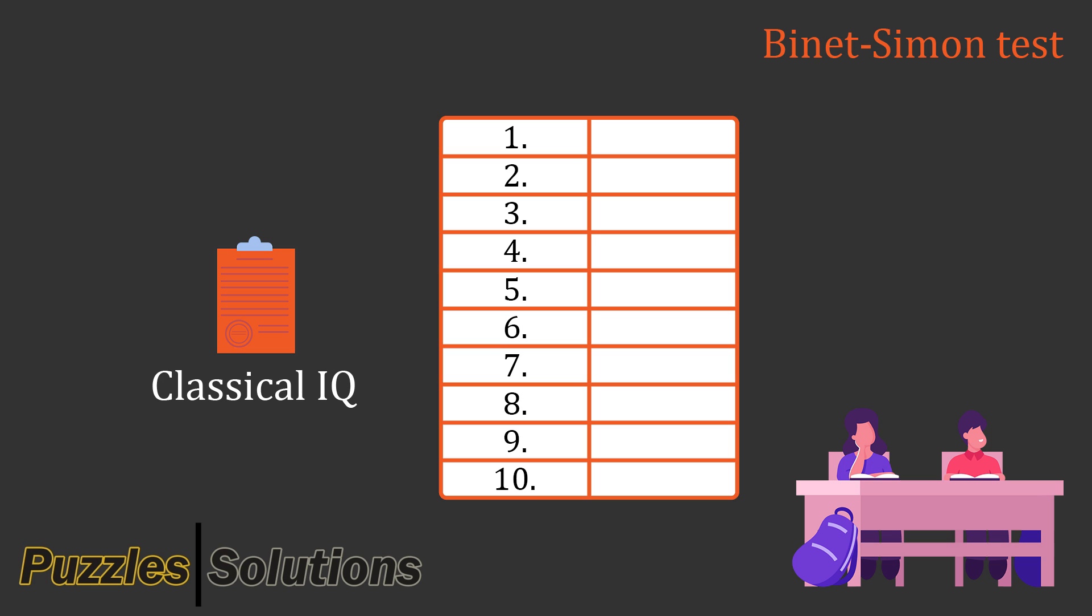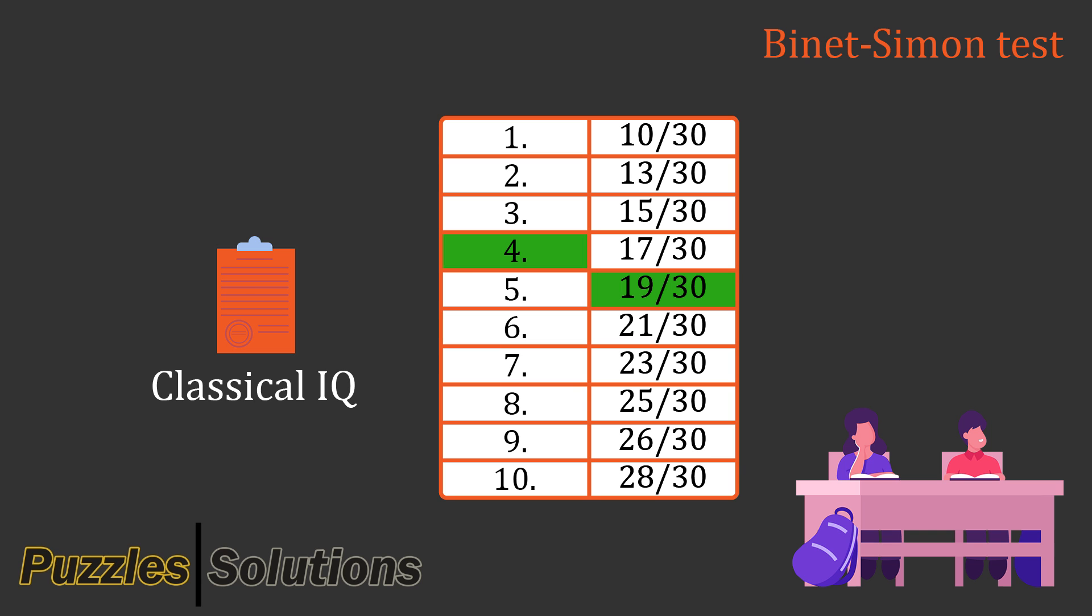The average score for first graders was 10 correct out of 30. For second graders it was 13 correct out of 30, and so on. Now that we have this data, we can start with the real testing. Our first subject is a fourth grader that scored 19 out of 30. This corresponds to the average score of the fifth graders, meaning that they would have the mental age of a fifth grader while the chronological age of a fourth grader.